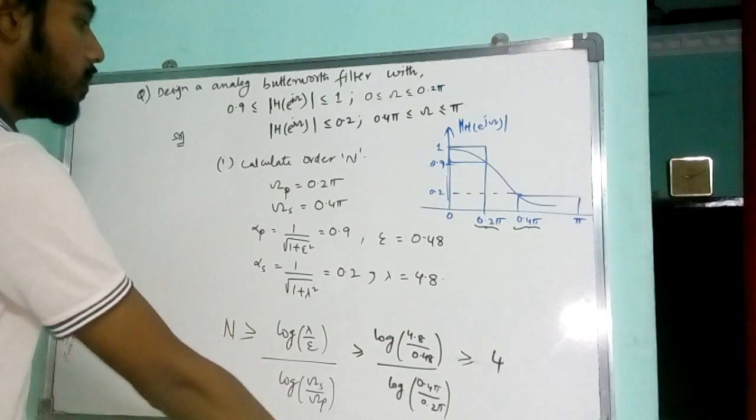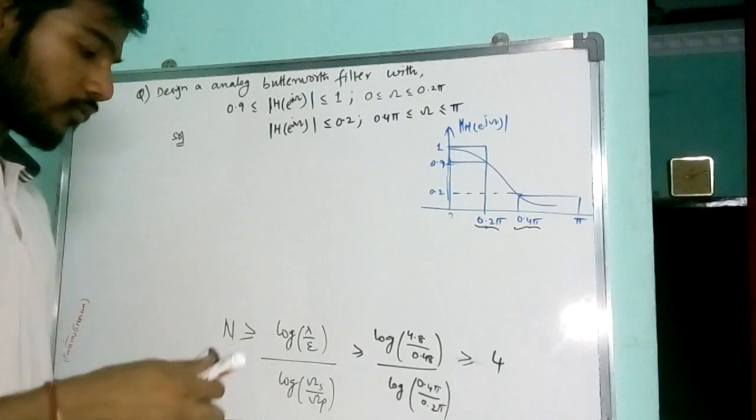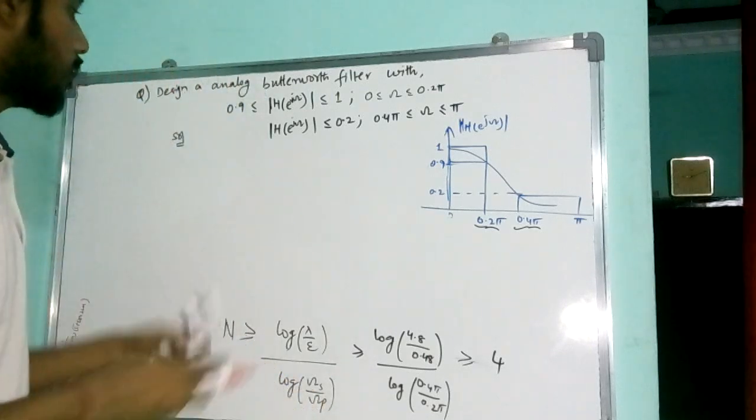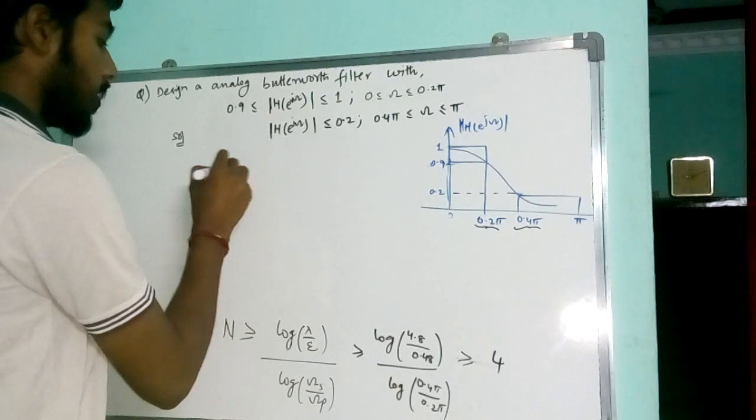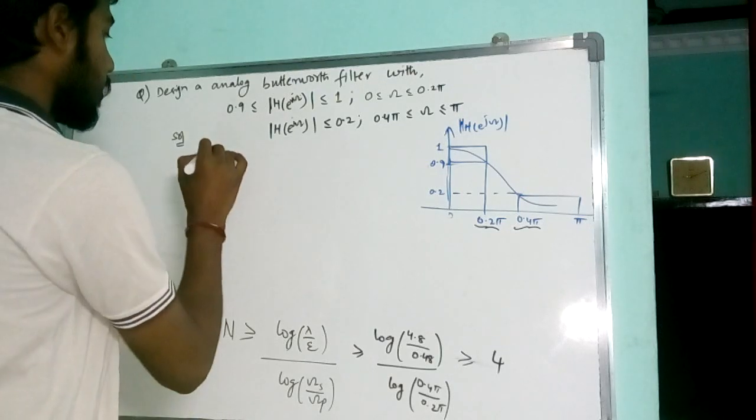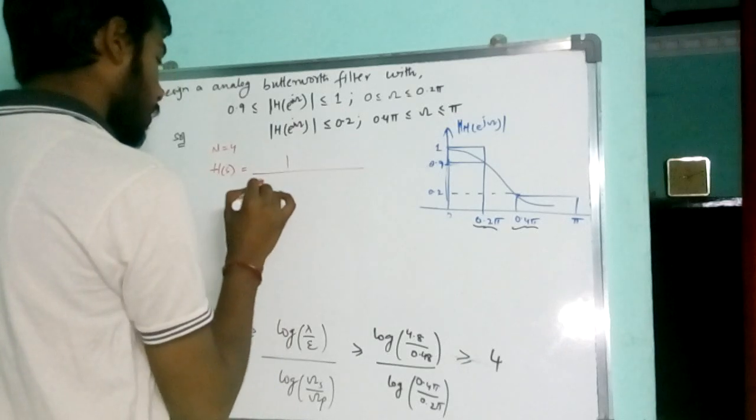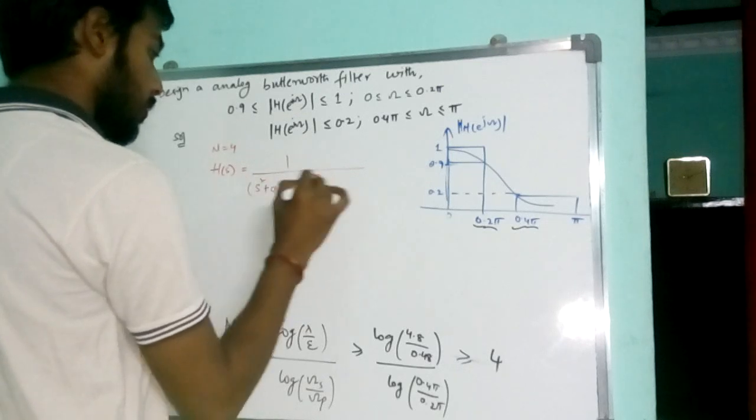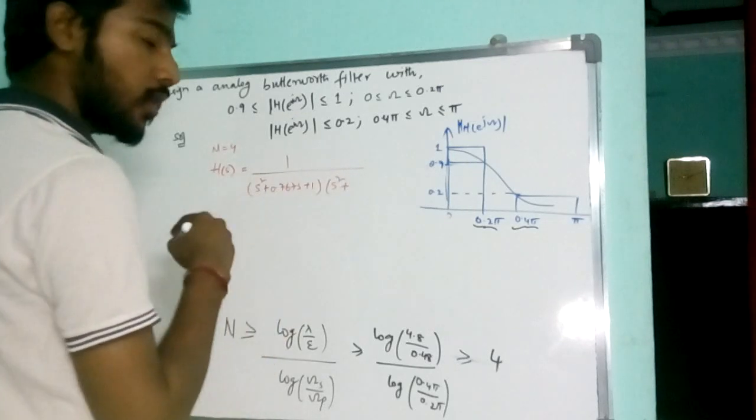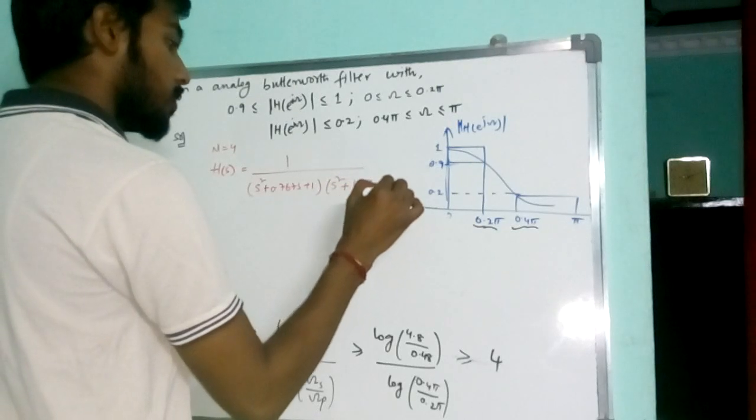Next thing is that for the design, I found all the values. For order n equal to 4, we know the transfer function h of s, the analog transfer function which we are highlighting for order n equal to 4. It is given by 1 by s square plus 0.677s plus 1 into s square plus 1.84s plus 1.